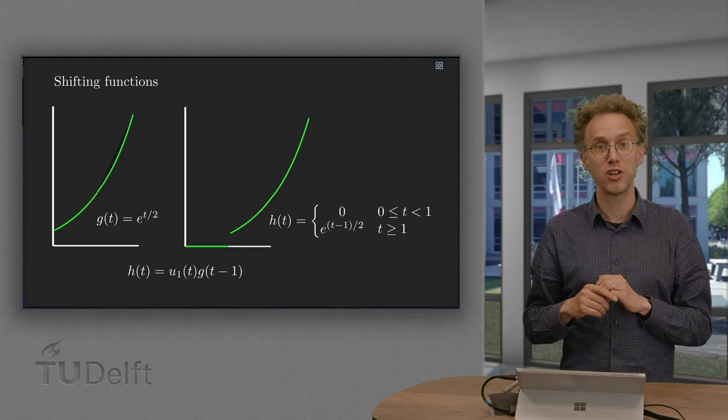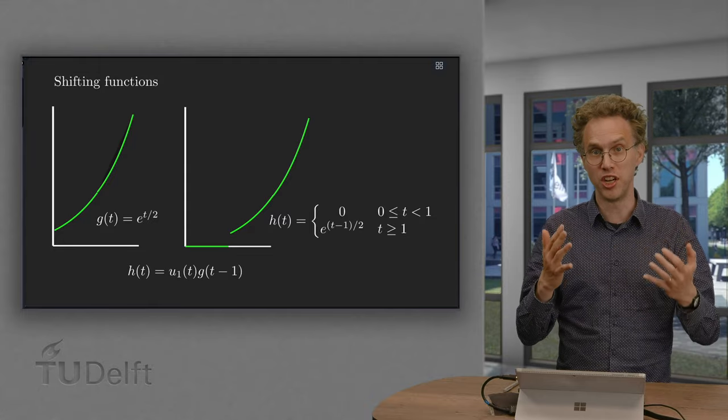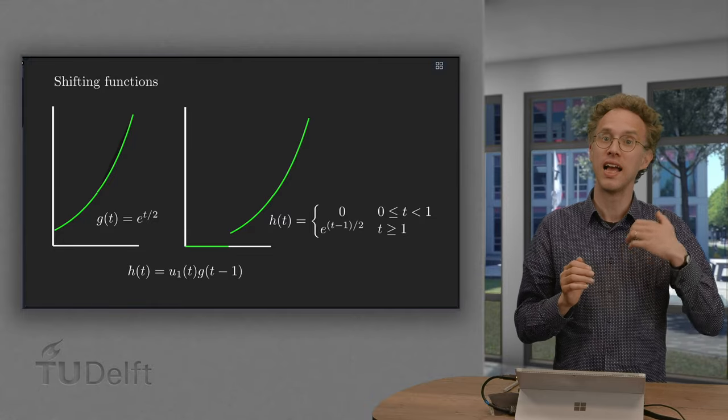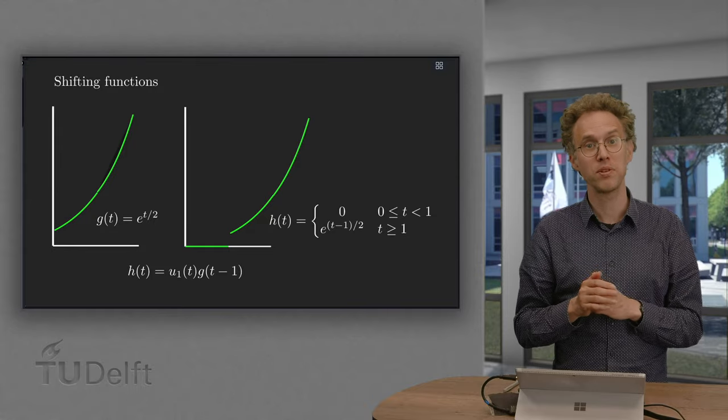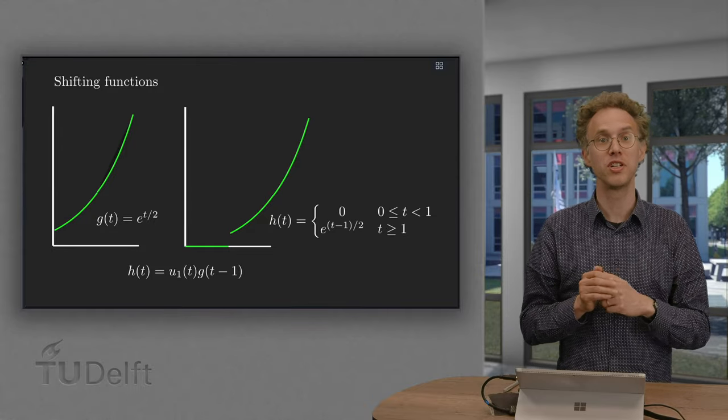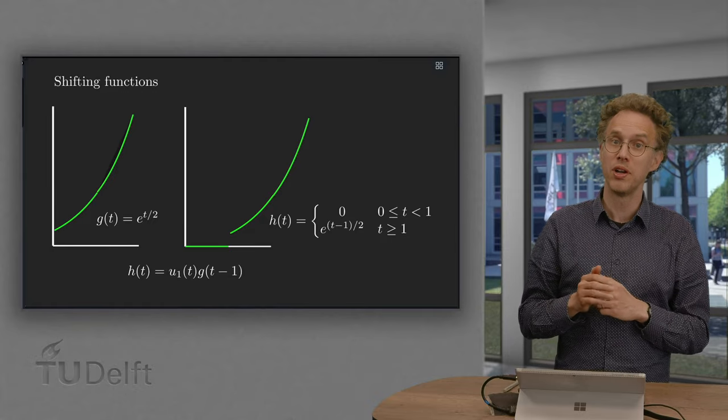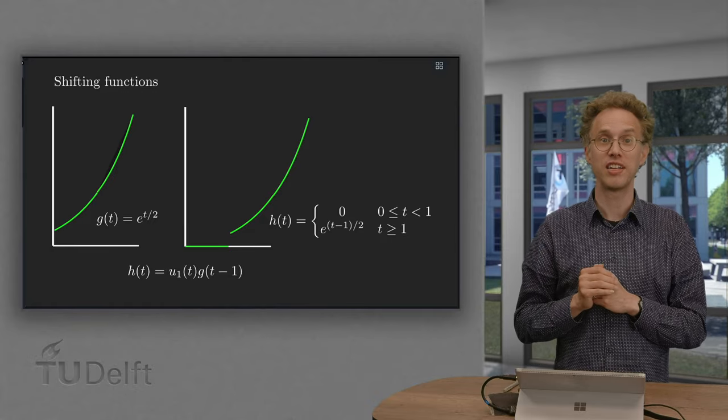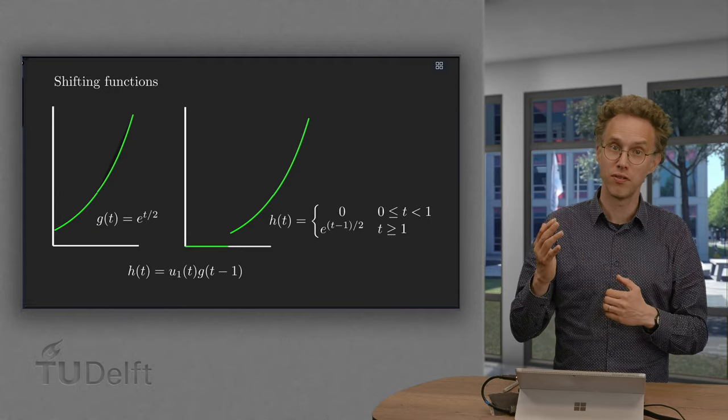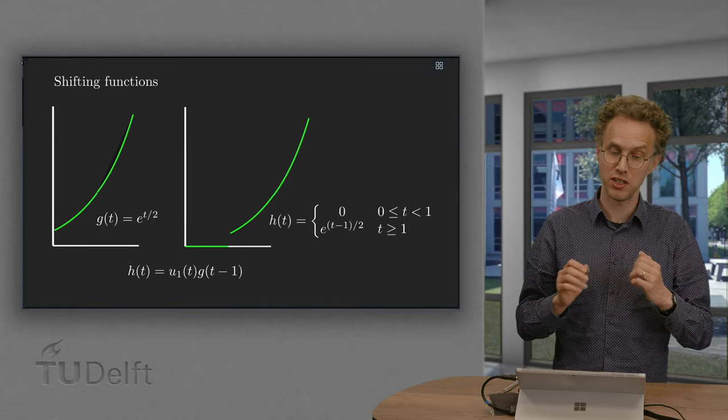We can also use them to start a function later, so set the first part of a function to zero and then continue without shifting. In the context of Laplace transforms, this second type is not very convenient for us. At the end of the video, we will show that we can sometimes rewrite the second type in terms of shifted functions, as the first type. Let us see how this works in this video.